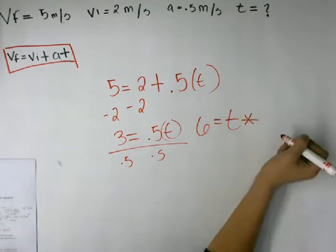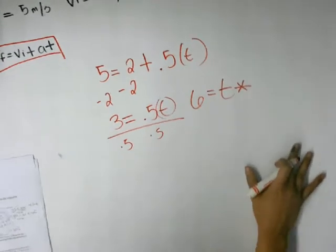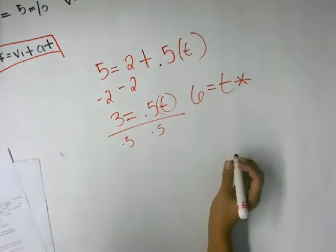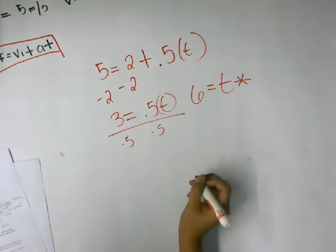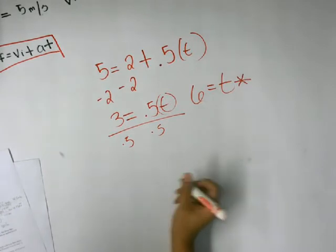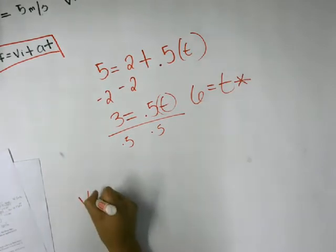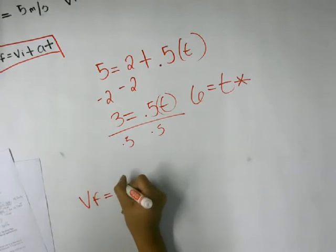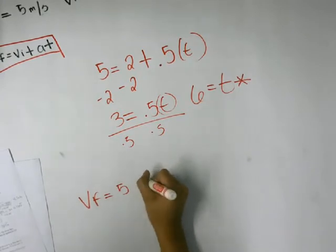So why don't we do another one that requires us to find another variable. So let's do this one. So VF equals 5, Vi equals negative 12.